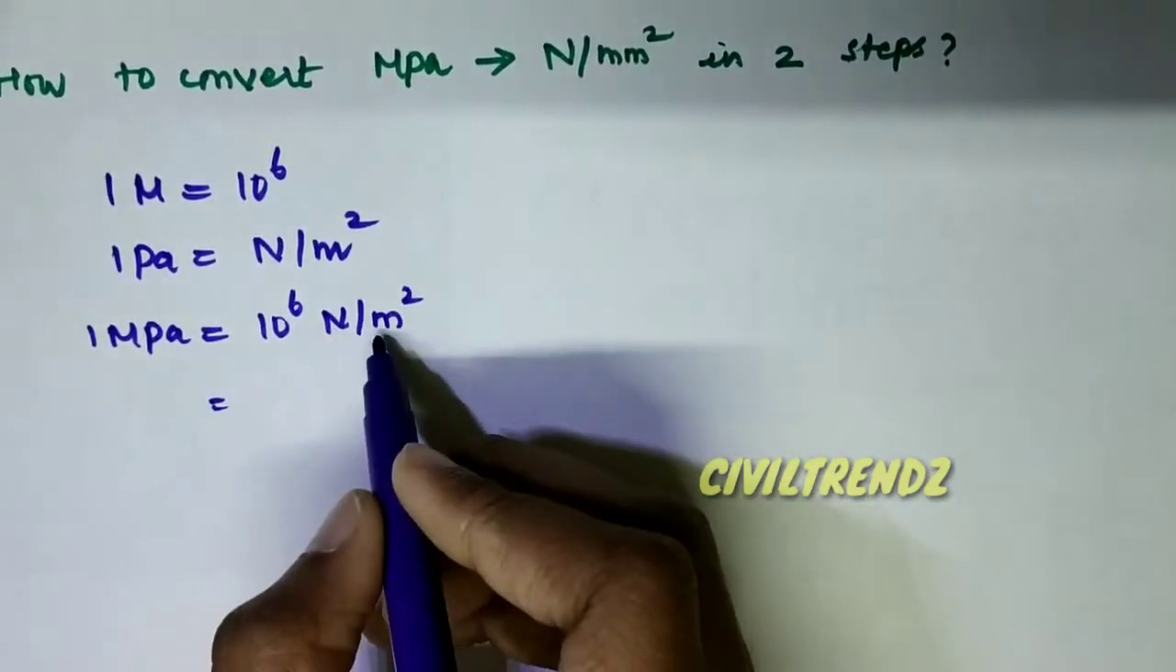Right? Now we convert meter square to mm². 1 meter equals 1000 mm. That is 1 meter equals 10 power 3 mm.